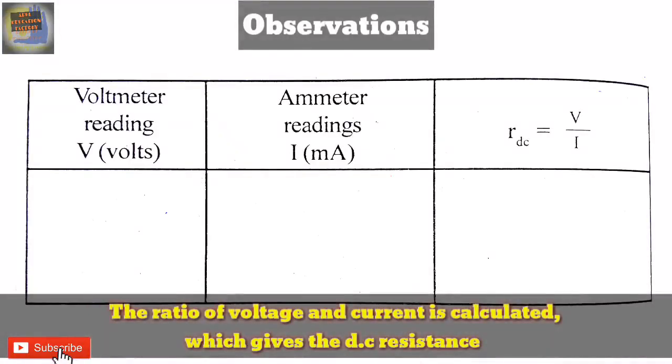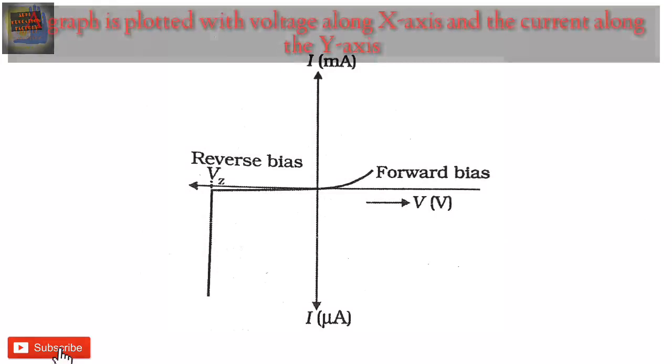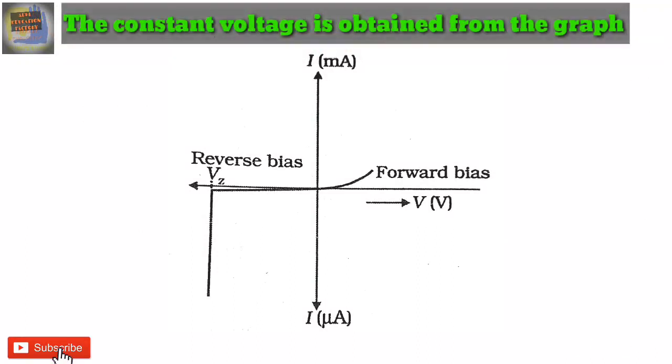Observations: The ratio of voltage and current is calculated, which gives the DC resistance. A graph is plotted with voltage along X axis and the current along the Y axis. The constant voltage is obtained from the graph.